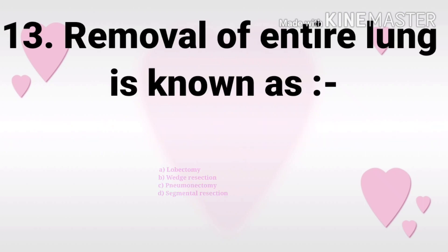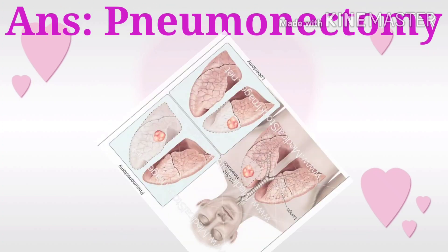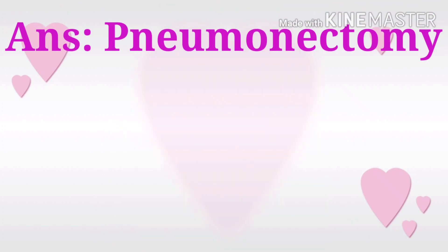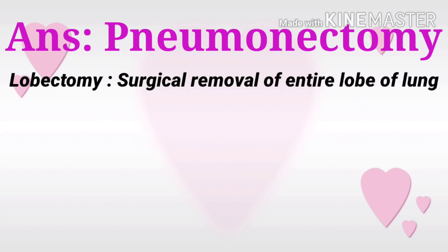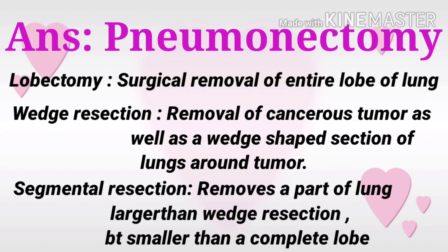Question 13: Removal of entire lung is known as? The options are lobectomy, wedge resection, pneumonectomy, and segmental resection. The answer is pneumonectomy. Lobectomy is the surgical removal of an entire lobe of the lung. Wedge resection is removal of a cancerous tumor along with a wedge-shaped section of lung around it. Segmental resection removes a part of lung larger than wedge resection but smaller than a complete lobe.